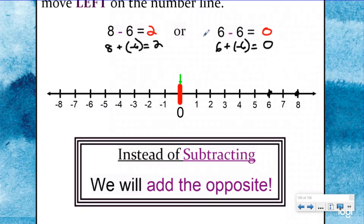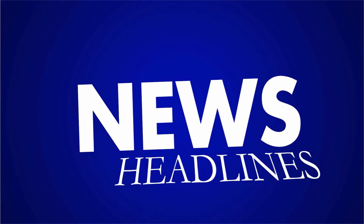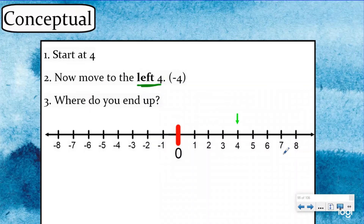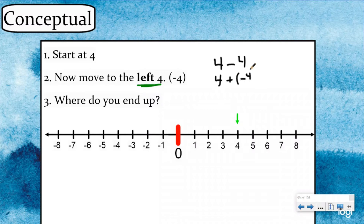Now back to your regularly scheduled program. Well, that was exciting. So we are going to start at four and then move to the left four units. Now before subtraction died we would say four minus four, but we're not going to do that anymore — subtraction has died. We are going to be adding the opposite. So we're going to say four plus negative four, because the opposite of positive four is negative four, and that's going to tell us to move four units to the left. So if I move four units to the left — one, two, three, four — I'm going to end up at zero.